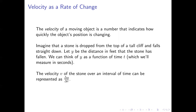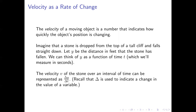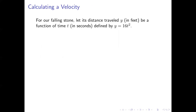We can calculate the velocity of our stone over an interval of time using the symbol delta Y over delta T, where delta — a letter from the Greek alphabet — indicates a change in the value of a variable. So we read that as 'change in Y over change in T.' Let's say we have a formula for this function that tells us how far the stone has traveled given how long it's been falling: Y equals 16T squared.